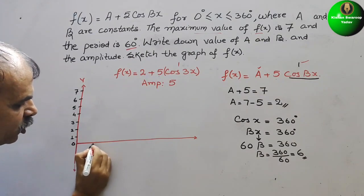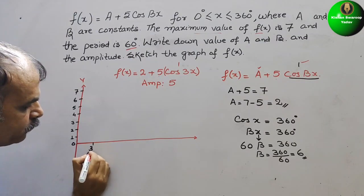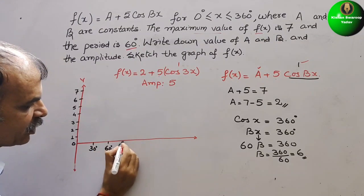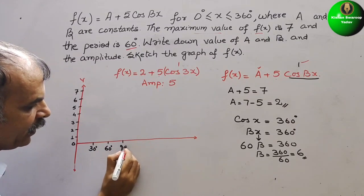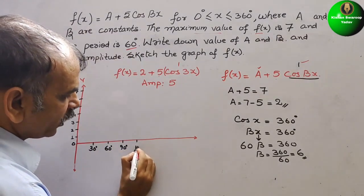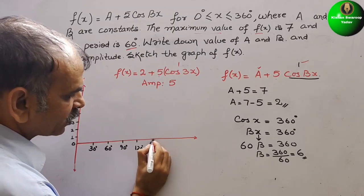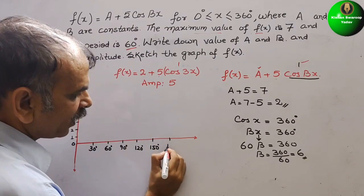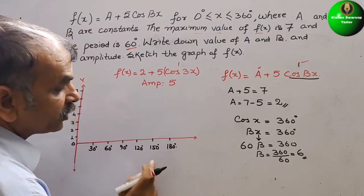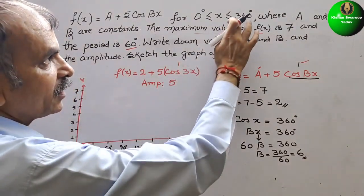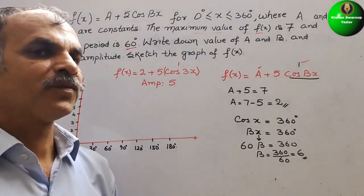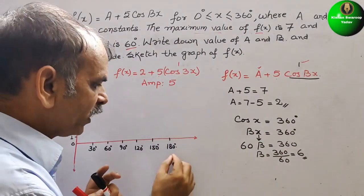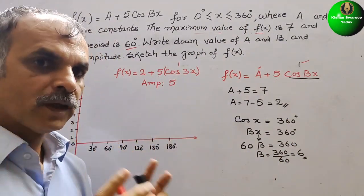The x-axis marks are: 0°, 30°, 60°, 90°, 120°, 150°, and 180°. We will plot up to 180° first to understand the shape, then extend to 360°.